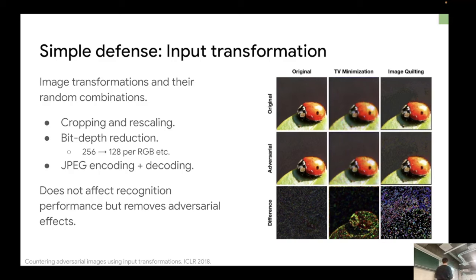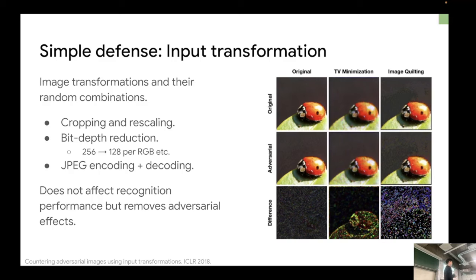The second example is bit-depth reduction. We typically use 256 values of RGB to represent each pixel. Instead of having 256 possibilities, you can reduce to seven bits and have 128 values, or go even lower. That's actually not going to change the appearance of the image very much, but these small perturbations are sufficient to remove the adversarial effect.